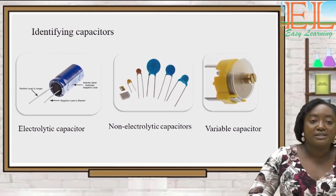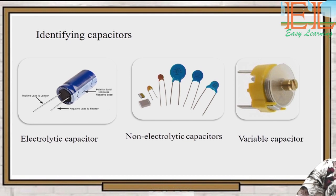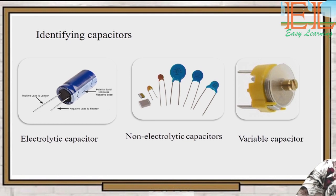The electrolytic capacitor has fixed polarities — a fixed positive side and a fixed negative side. The positive side is the longer lead, while the negative side is the shorter lead. Non-electrolytic capacitors, on the other hand, are not sensitive to polarities, so either side can be placed at any point in a circuit and it will work perfectly. We also have variable capacitors, whose capacitances can be varied as needed.